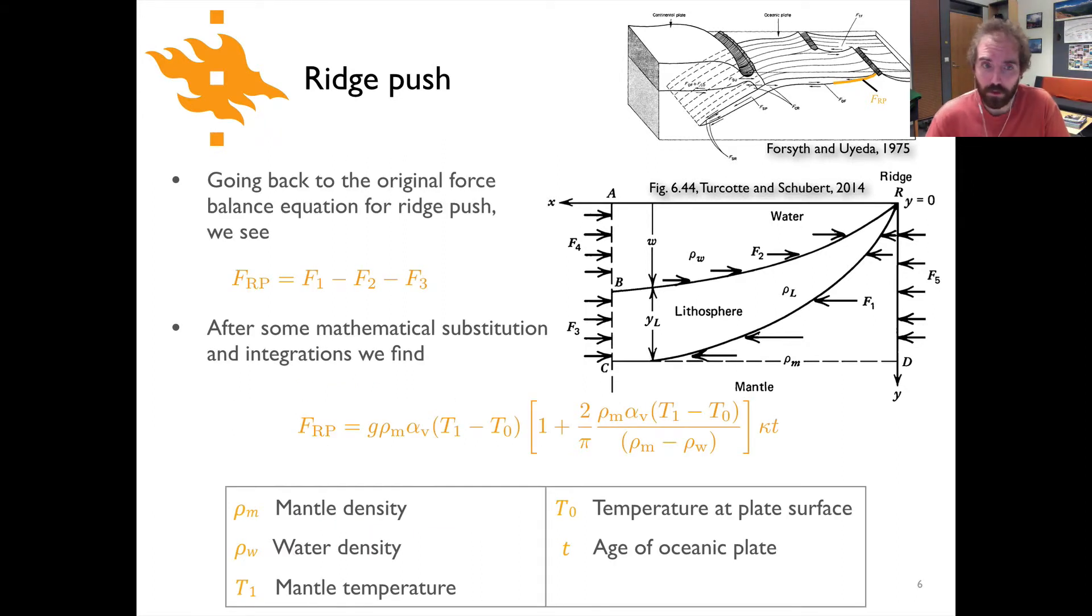So if we were to then calculate all of those integrated pressures and go back to our original relationship for the ridge push force, remember we had this f1 minus f2 minus f3, the force along the base minus the force on the top and the force on the side. And if we did a little bit of mathematical rearrangement, you'll basically come out with a relationship for the ridge push that looks like this where you have gravity times the mantle density times this coefficient of volumetric expansion, the temperature at the base and top, so that's the mantle temperature and the temperature at the plate surface, times 1 plus 2 over π times the mantle density times the coefficient of volumetric expansion times the temperature difference again.